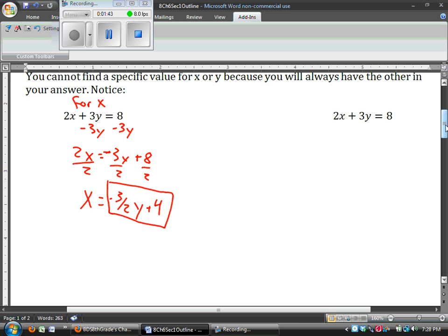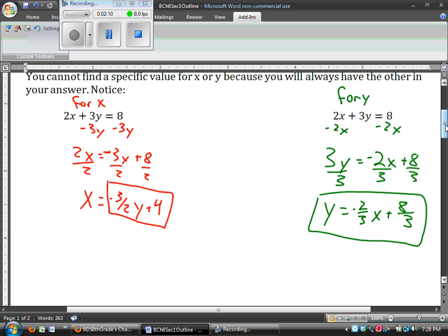So let's try and solve it for y, and we can see that the same thing will happen. I'll subtract 2x and get 3y equals negative 2x plus 8, divide by 3, and y is equal to negative 2 thirds x plus 8 thirds. And so again, we see that that doesn't help us at all. We still don't have a value for y.